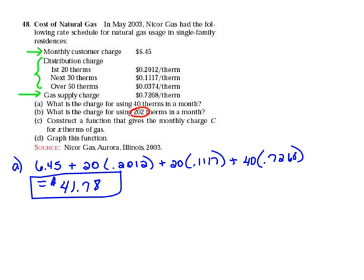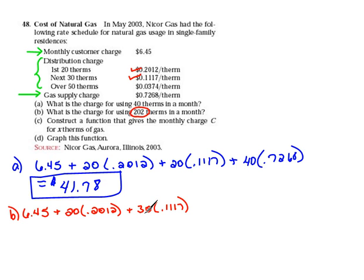This time we're going to be charged for 202 therms, and we want to see how different that would be. First of all, we're paying our monthly customer charge of $6.45, no matter what. Then the first 20 we pay at the $0.2012 rate. If we've paid for 20 therms and we used 202, that means we still have 182 that we've not paid for yet. Well, the next 30 we get charged at $0.1117, so plus 30 at $0.1117. Now we've been charged for 50 therms, and we still have 152 that we've not paid for yet. Everything over 50 gets charged at a different rate, so we still have to pay for 152 therms at the $0.0374 rate.